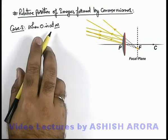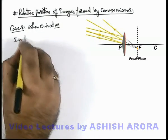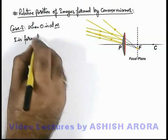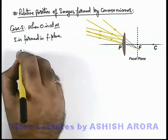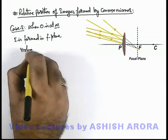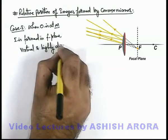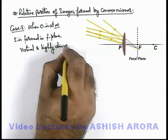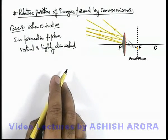We can write when object is at infinity, then image is formed in focal plane and it is virtual and highly diminished, because the size of image formed will be very small compared to that of object which is located at infinity.